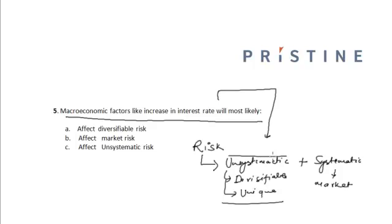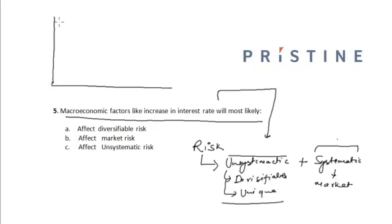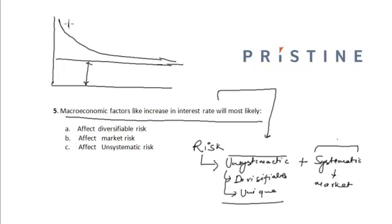The unsystematic risk refers to risks which can be diversified using a portfolio of securities, whereas the systematic risk or market risk is dependent upon the overall macroeconomic factors and it cannot be diversified away — it is totally dependent upon macroeconomic factors like interest rate and GDP. If you plot the risk graph for a security, as we continue to add more and more securities, the risk profile of the overall portfolio decreases and reaches a particular value.